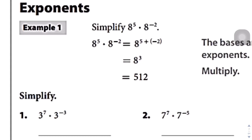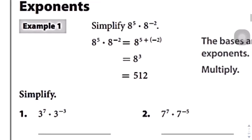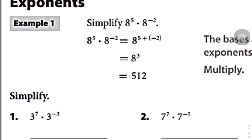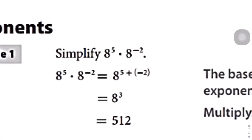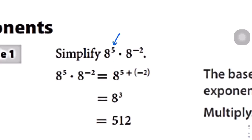Here we are with question number 1. We're going to do a crash course on exponents because you will need to understand how exponents work when dealing with quadratic expressions and equations. Let's take a look at the example first: 8 to the power of 5 times 8 to the power of negative 2. This part of the term is called the base, and this little number here is the exponent. The exponent tells you how many times you're going to multiply the number by itself.